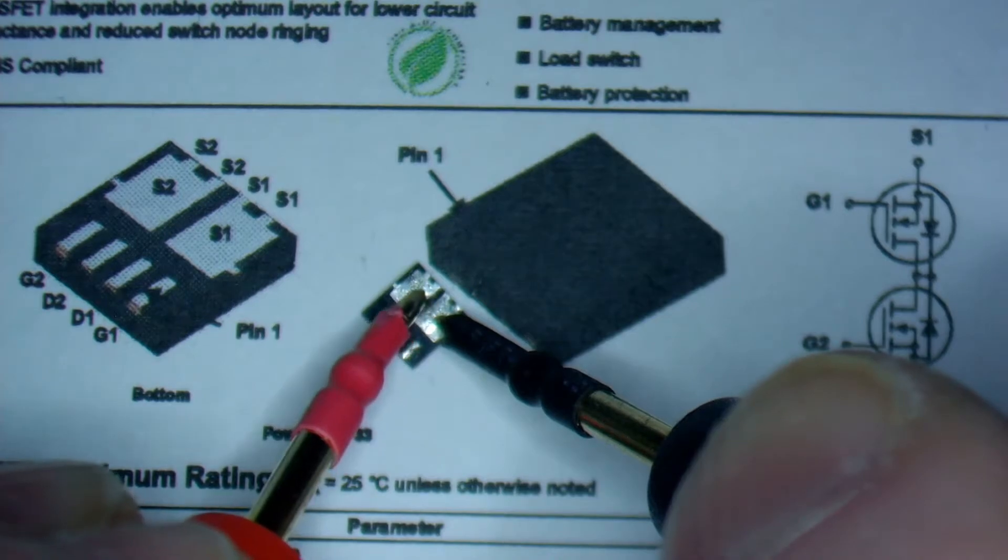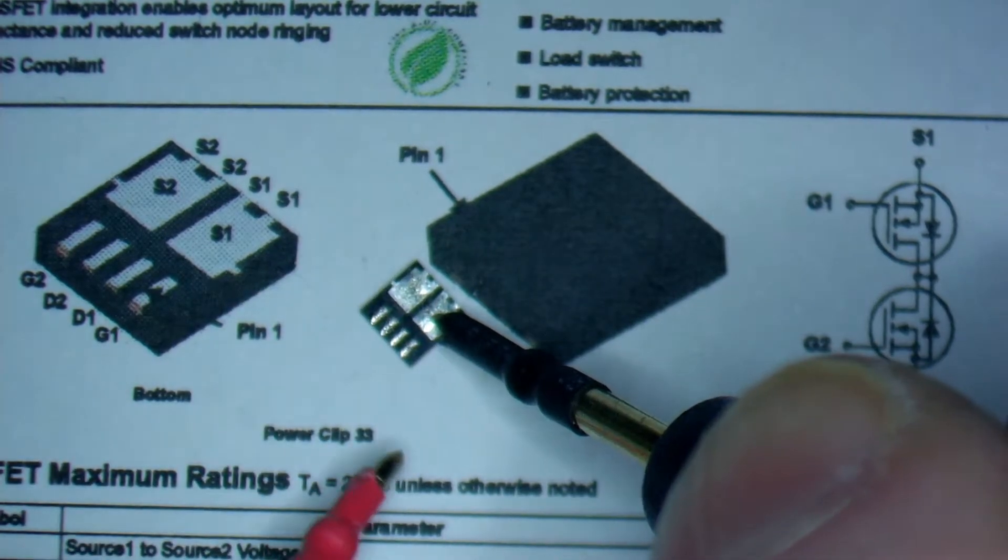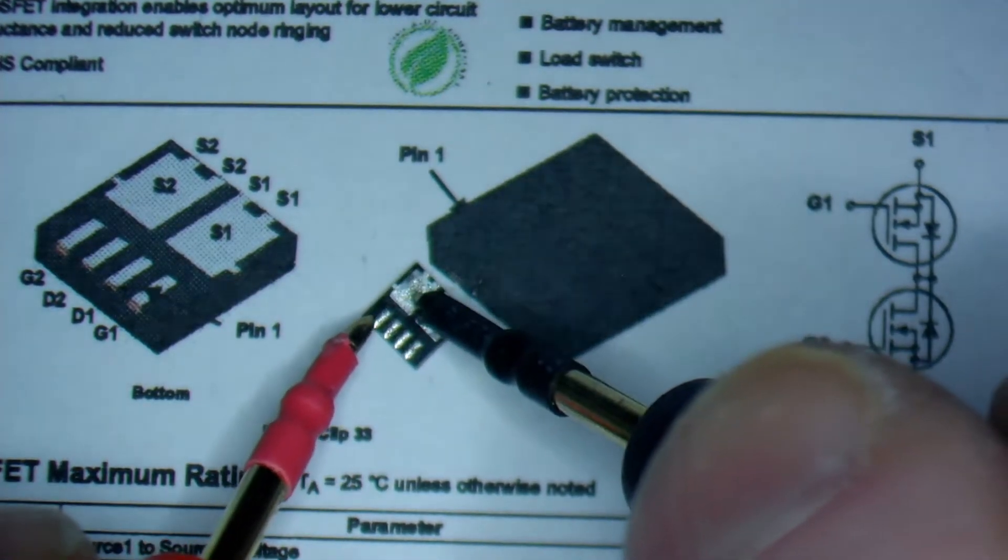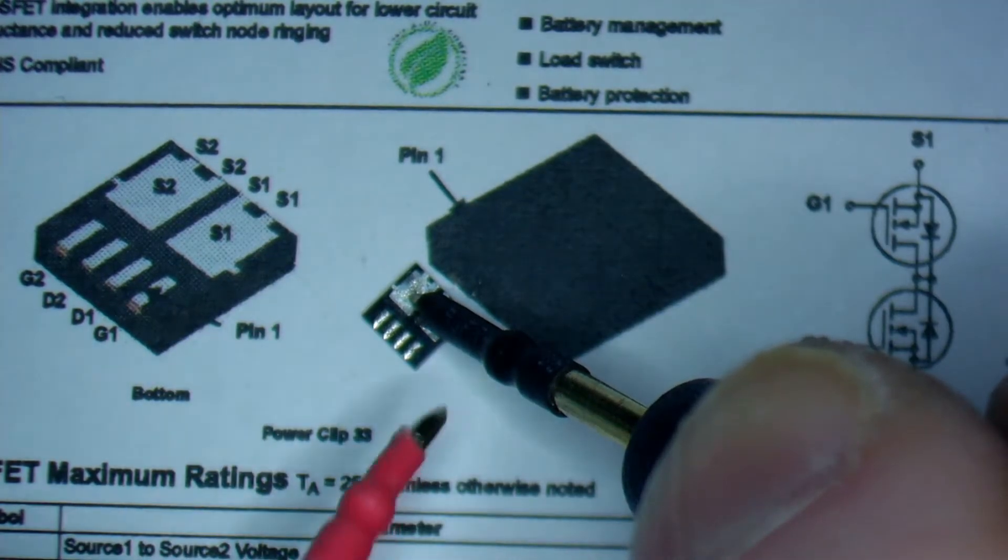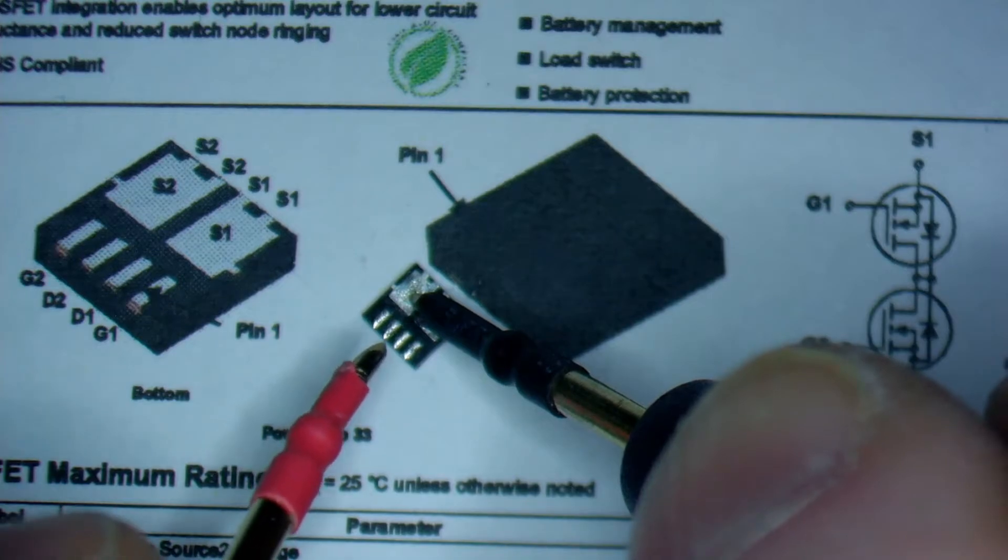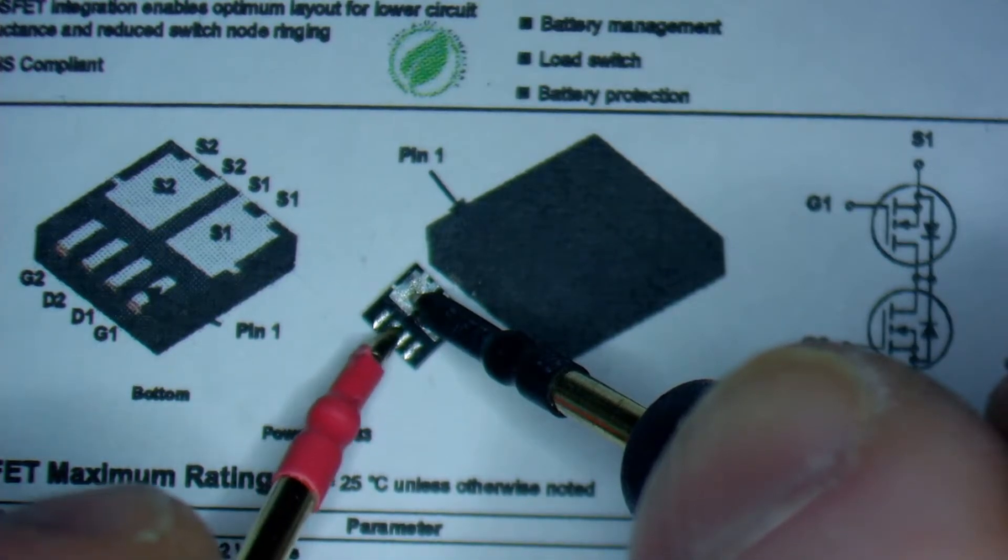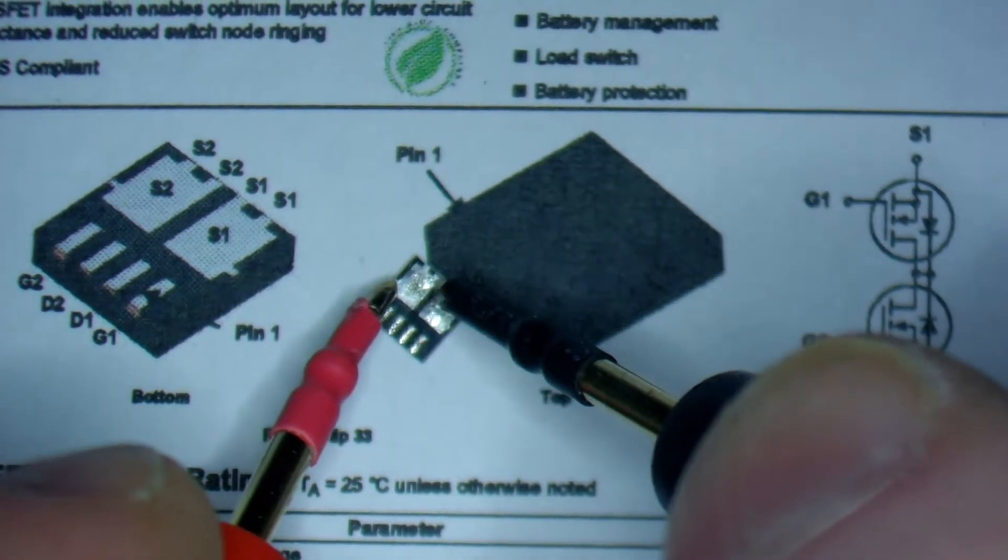And we have continuity to both MOSFETs. What actually happened is that by putting the red probe on the gate 2, I actually charged the MOSFET and I opened the gate. And now it actually is conductive.